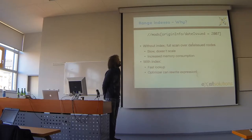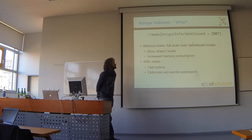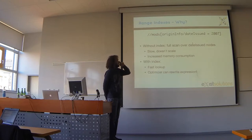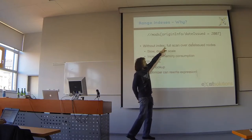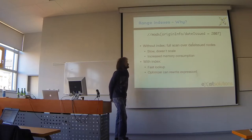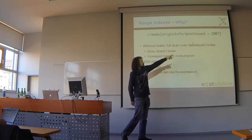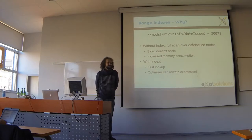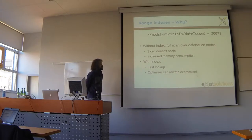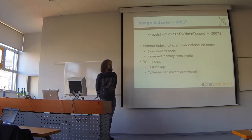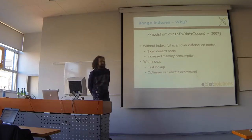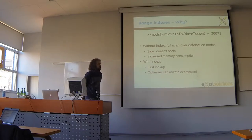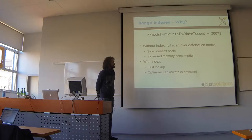Without an index, the XQuery engine has to proceed in brute force mode. It has to go through all the records and look for the date issued element. Path lookups are done through a structural index automatically, but to check if the date issued is really 2007, the query engine has to load the date issued elements and check for the date one by one. This is comparable to a full table scan in a relational database, and behavior will be more or less linear — a growing database will just take longer.